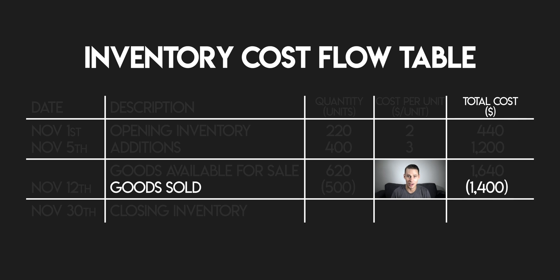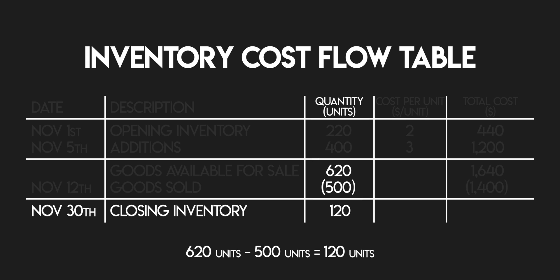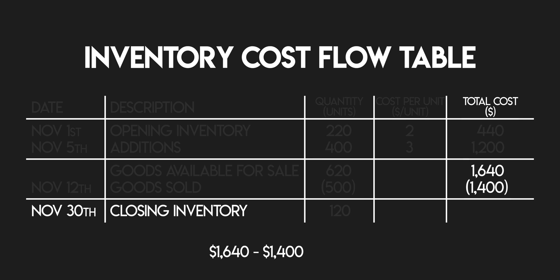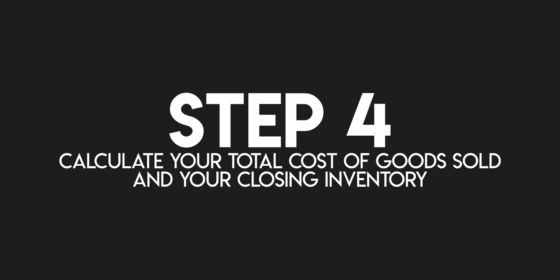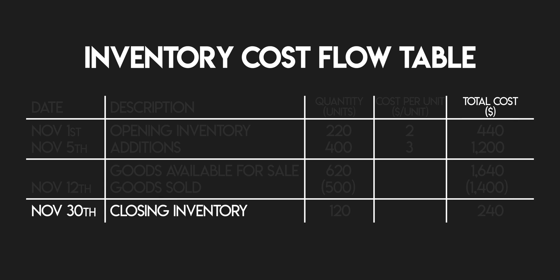That's the tough bit out of the way. Now let's find your closing inventory on November 30th. 620 minus 500 gives you 120 units, and $1,640 minus $1,400 gives you $240. Step four: calculate your total cost of goods sold and closing inventory. You only made one sale, so your total cost of goods sold for November is $1,400, and the total cost of your closing inventory is $240. You can use these same four steps to solve any inventory cost flow problem.